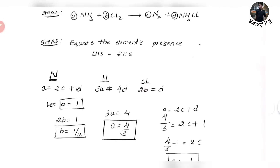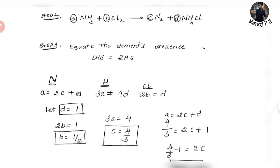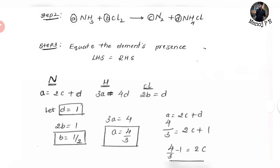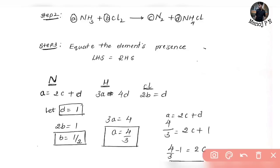If you want to consider the stoichiometric coefficients, equate the elements present on LHS and RHS. So what do you want to do? Let's put nitrogen first — put the rarest elements in the subscript.